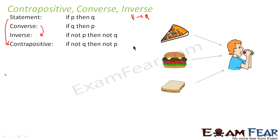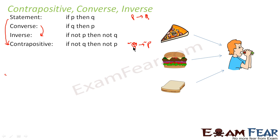To find the contrapositive, remember: 'contra' means you change direction. So instead of p to q, it becomes q to p. And since the contrapositive must be positive (same as the statement), you may have to add a negative sign. If you add negatives to both sides, only then does the statement meaning remain the same.